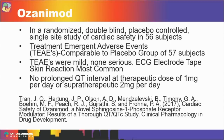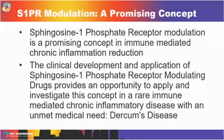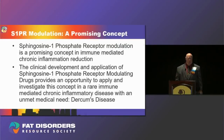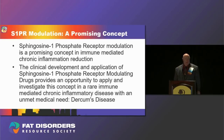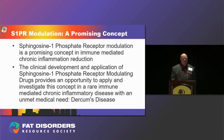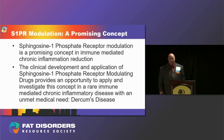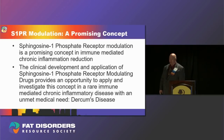The most significant treatment-emergent adverse events were some skin irritation due to electrode tape. This whole concept of sphingosine-1 phosphate receptor modulation is a promising concept in immune-mediated chronic inflammation reduction. The clinical development of S1P receptor-modulating drugs provides an opportunity to apply and investigate this concept in Dercum's disease, a rare immune-mediated chronic inflammatory disease with a significant unmet medical need.